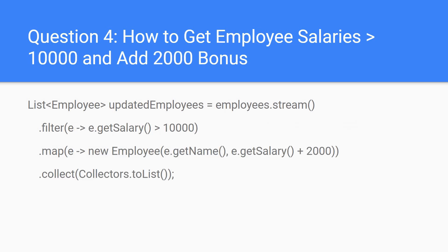Question 4: how to get employees with salary greater than 10,000 and add a 2,000 bonus? They want to understand whether you're comfortable with stream and lambda operations. We have a list of employees, call stream(), then filter() using the condition e.getSalary() > 10000, then map() to create a new employee object with salary plus 2,000. The terminal operation collect() converts the result into a list of updated employees.